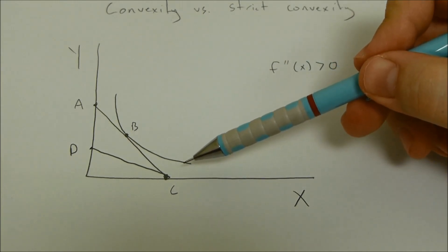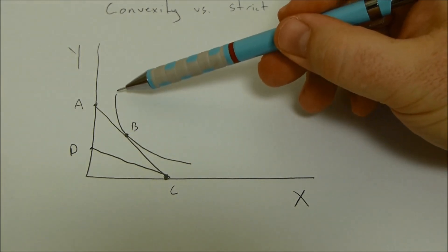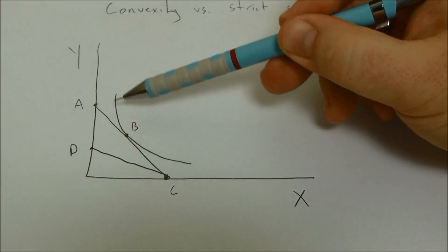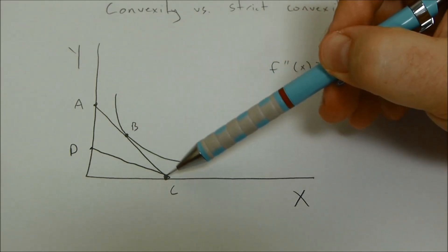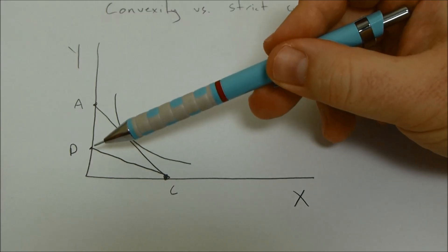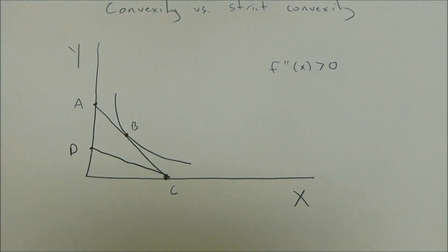So in this example here with this graph, only one of the lines is strictly convex, the one with the slope. These other two lines are simply convex or linear.